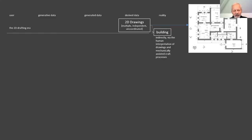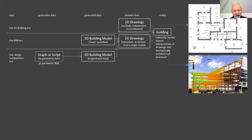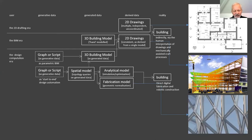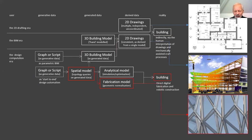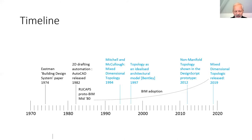We have this progression from the 2D drawing era to the BIM era, where drawings are essentially derived from the 3D model, to the design computation era, where we can either have a script driving BIM or a script driving a spatial model. If we have the spatial model, we can have two routes to the building: through generating BIM, through generating drawings, or generating a fabrication model and directly generating the building. Looking at the timeline for BIM overlaid with topology modeling, you can see that both are multi-decade projects, and we still haven't reached really serious adoption.